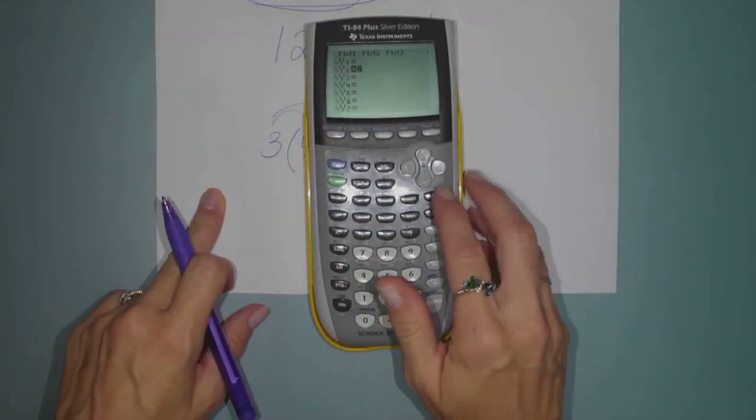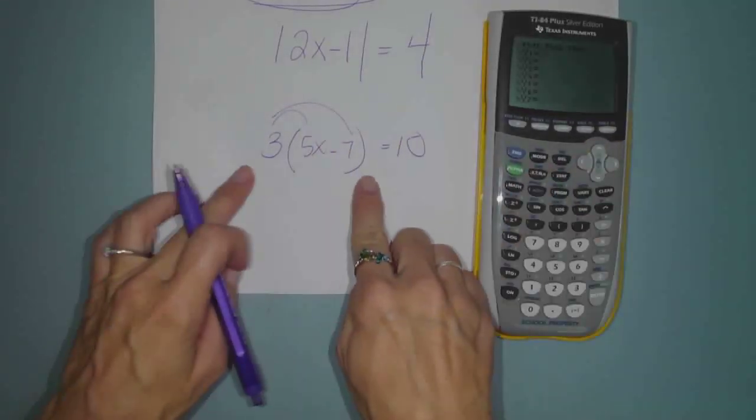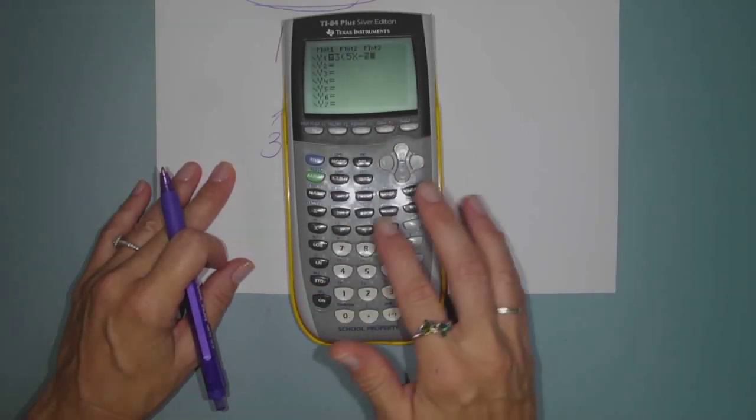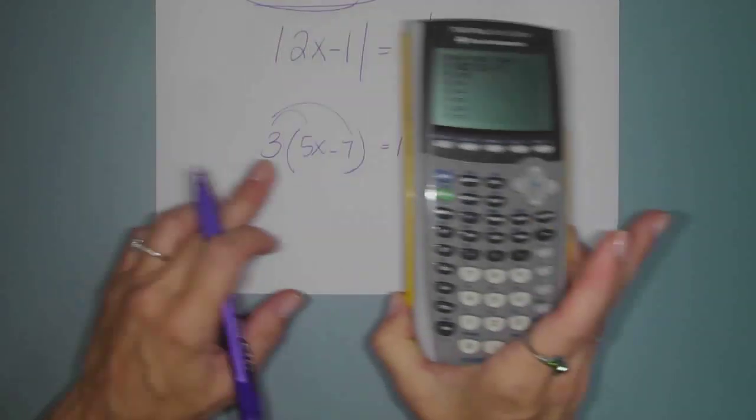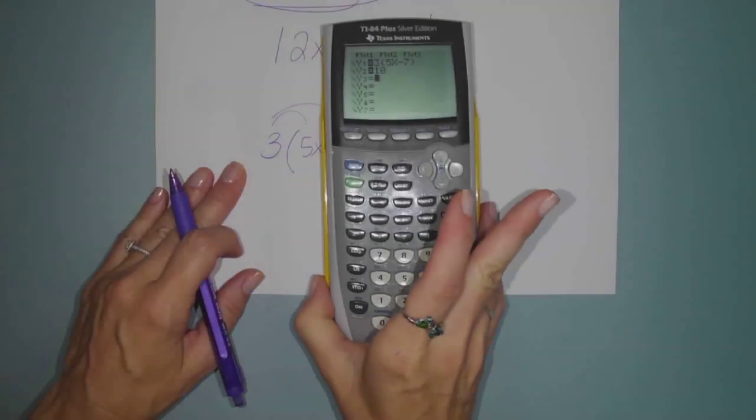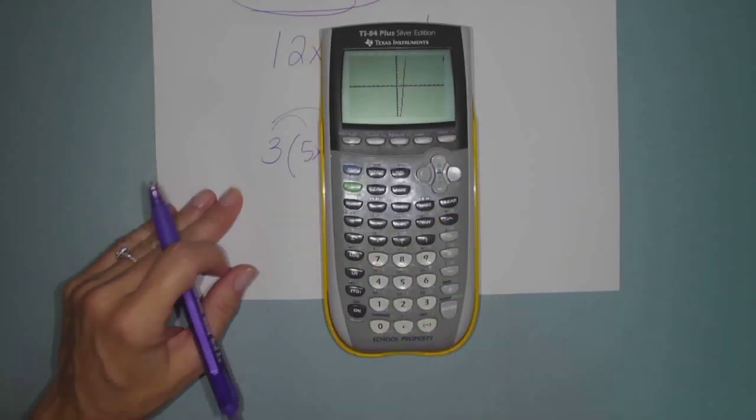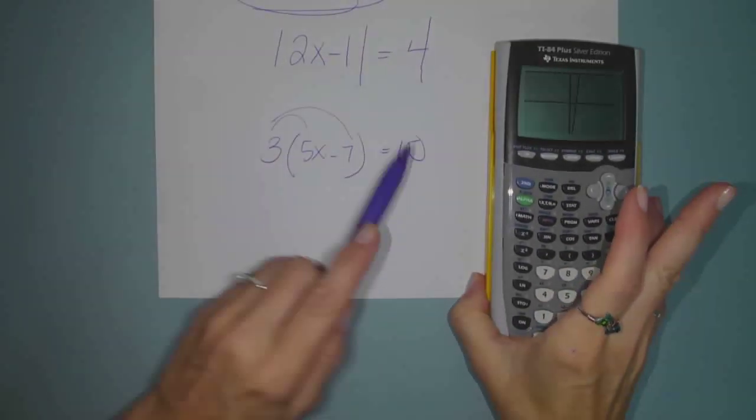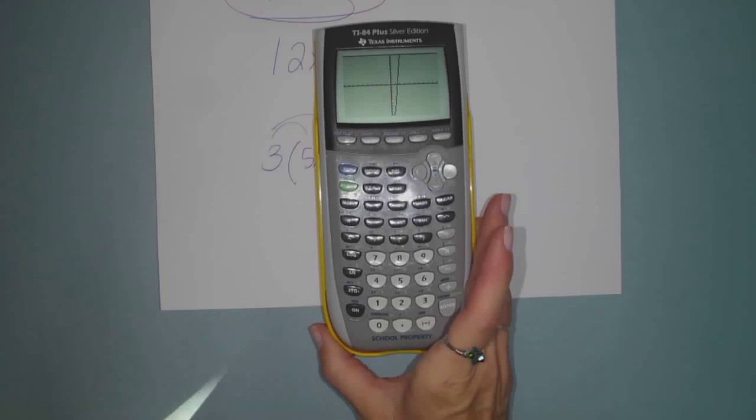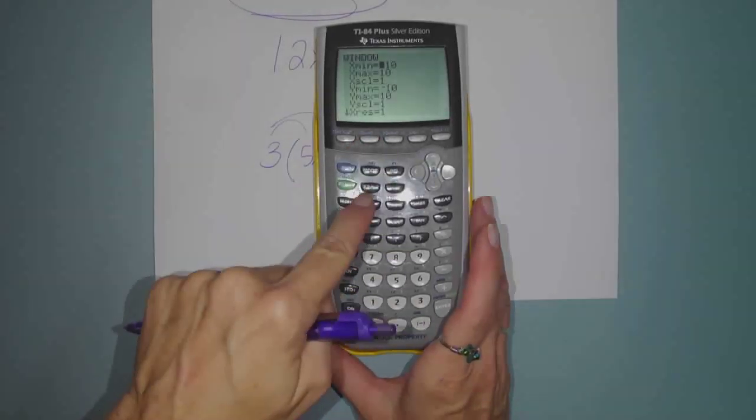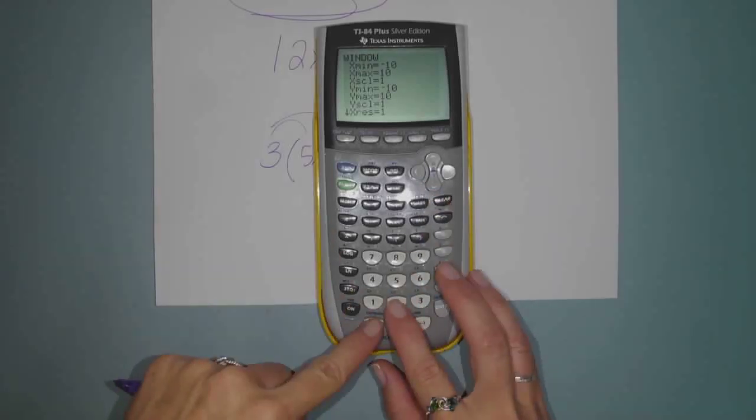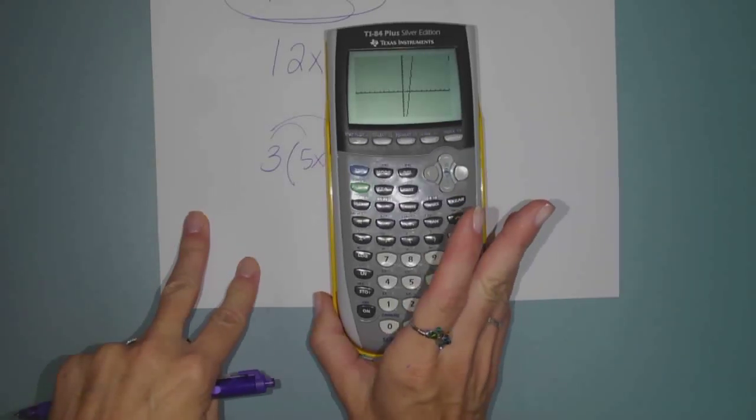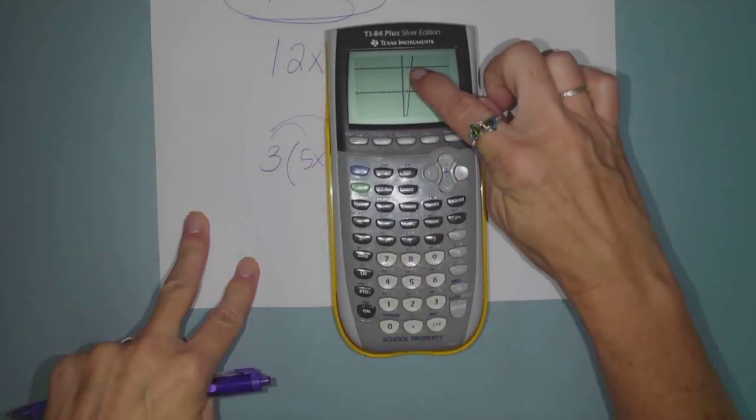Okay. In y1, put the left side. So 3 times the quantity 5x minus 7. Hit graph. Okay. Now it looks like that horizontal line there at y equals 10. I need to go a little bit higher there to get my intersection. So let me change my window. If I hit window and stretch my y maximum maybe to 15, y max 15, and press graph again, you should see a better intersection right there.